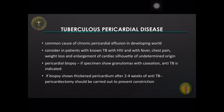Tuberculous pericardial disease is a common cause of chronic pericardial effusion in the developing world. It should be considered in patients with known tuberculosis, with HIV, and with fever, chest pain, weight loss, and enlargement of cardiac silhouette of undetermined origin. If pericardial biopsy specimens show granulomas with caseation, anti-TB therapy is indicated. If biopsy shows thickened pericardium after 2–4 weeks of anti-TB therapy, pericardiectomy should be carried out to prevent constriction.